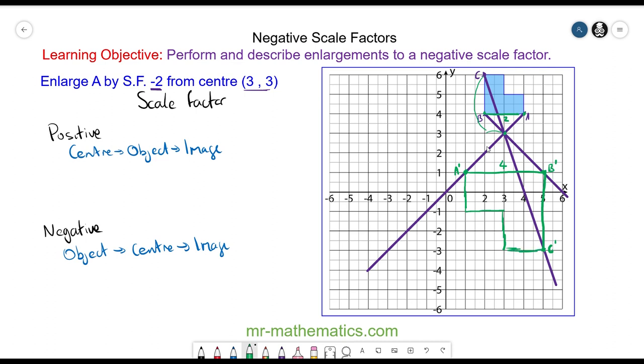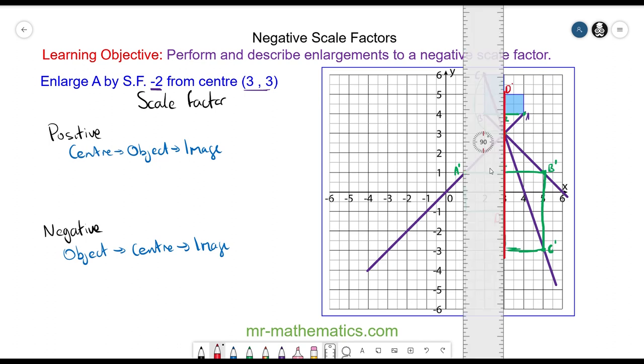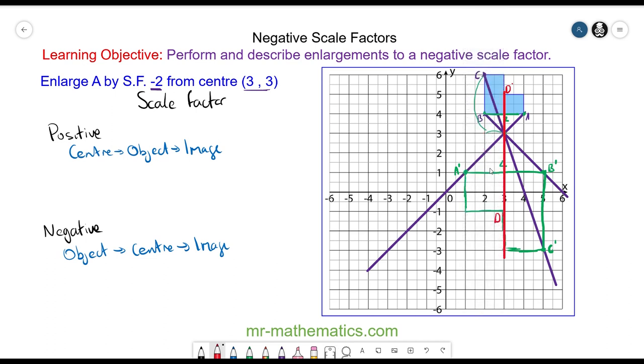We can check this is right by drawing another ray through this vertex and that should pass through here as well as the centre and you can see that that does.